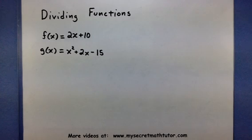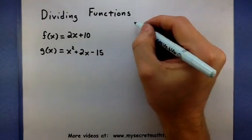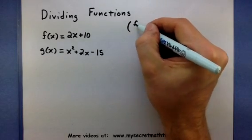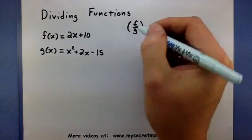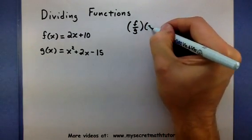So for this, I have my functions f and g. And the notation you might see for division looks like this. It says f divided by g of x.